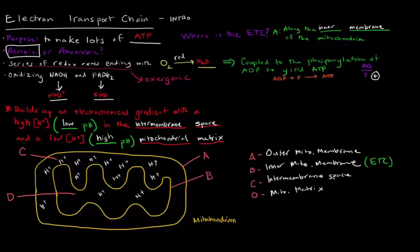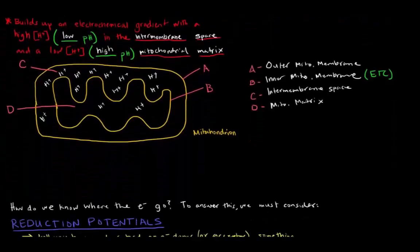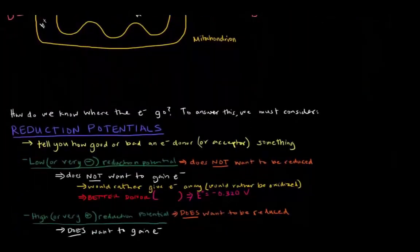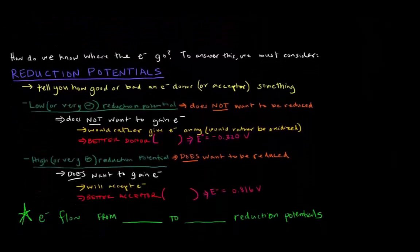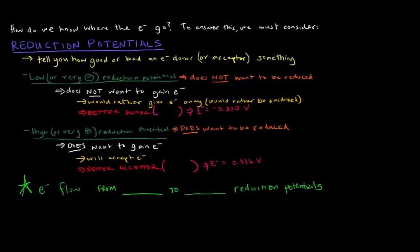What we need to understand about the electron transport chain is that, because it's a series of redox reactions, we need to understand the idea of reduction potentials. The reason why is because we want to know where the electrons are going — with a bunch of redox reactions, there's loss and gain of electrons, and reduction potentials tell us how good or bad an electron donor or acceptor something is.